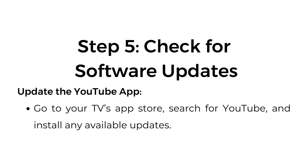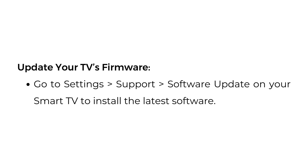Step 5: Check for software updates. Update the YouTube app by going to your TV's app store, searching for YouTube, and installing any available updates. Also update your TV's firmware by going to Settings > Support > Software Update on your smart TV to install the latest software.